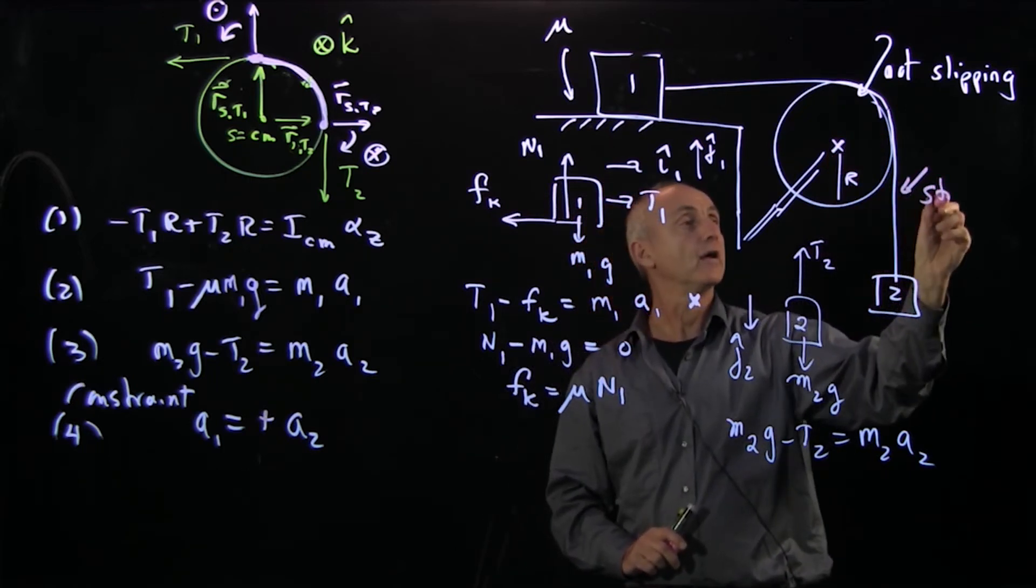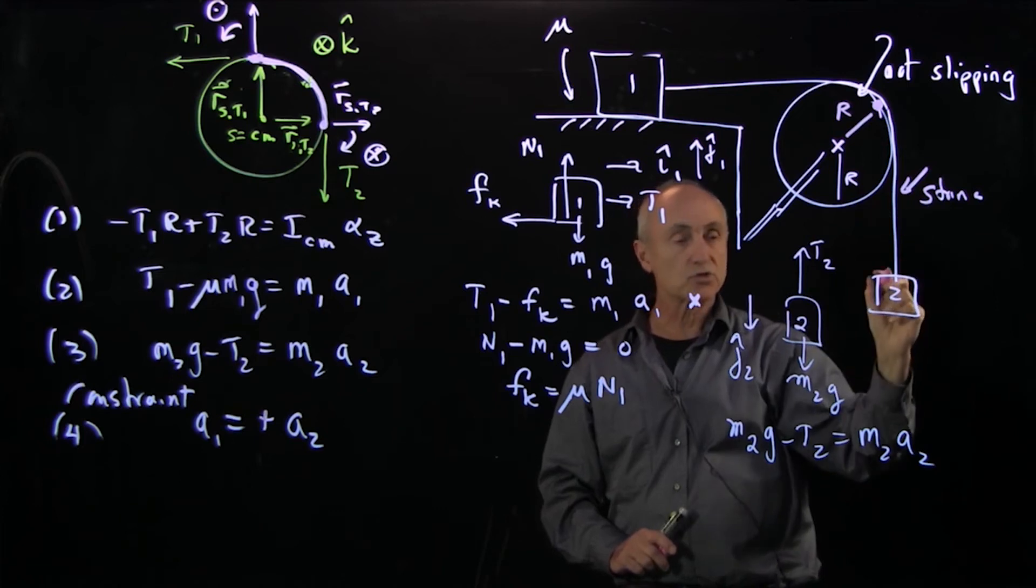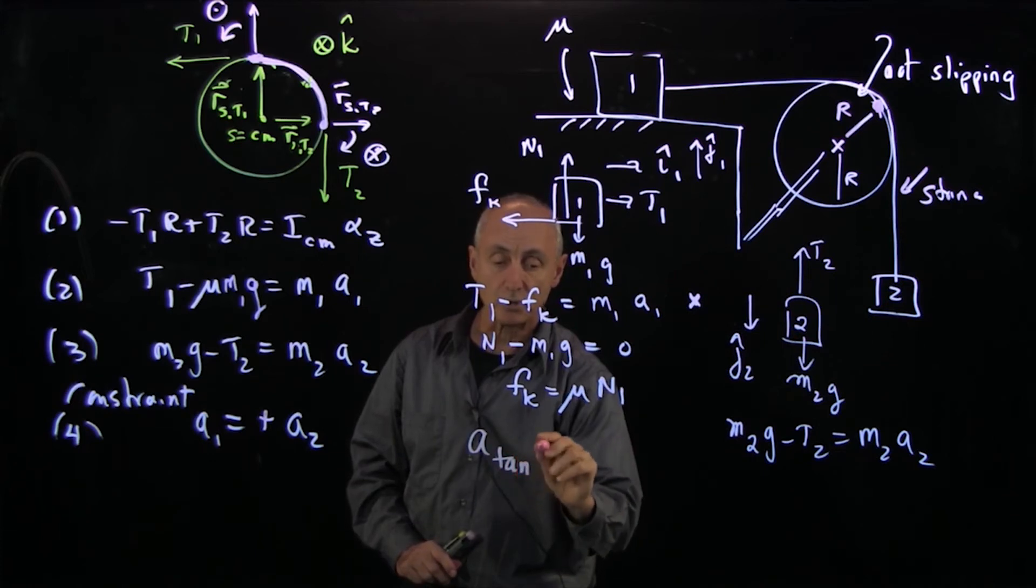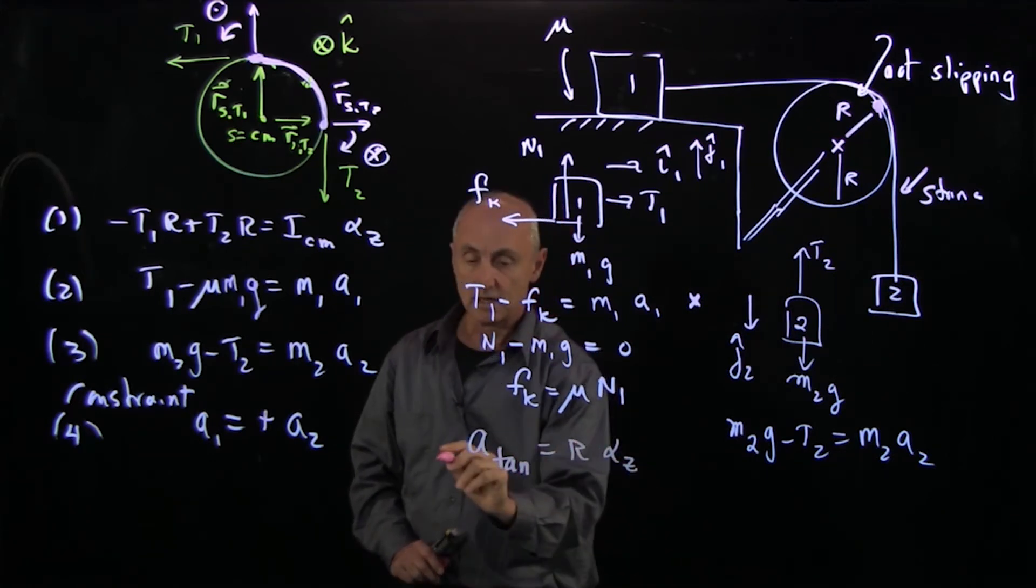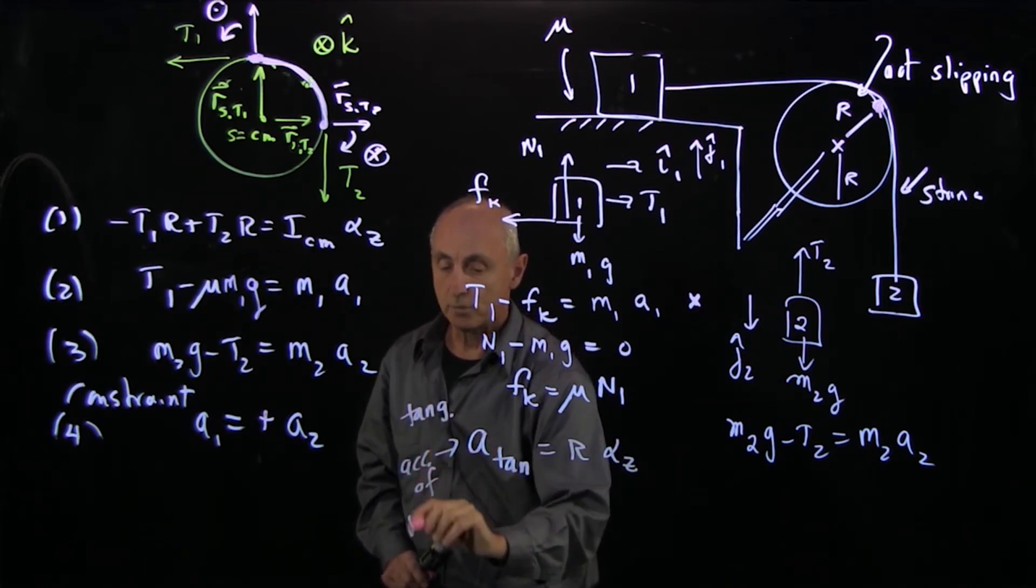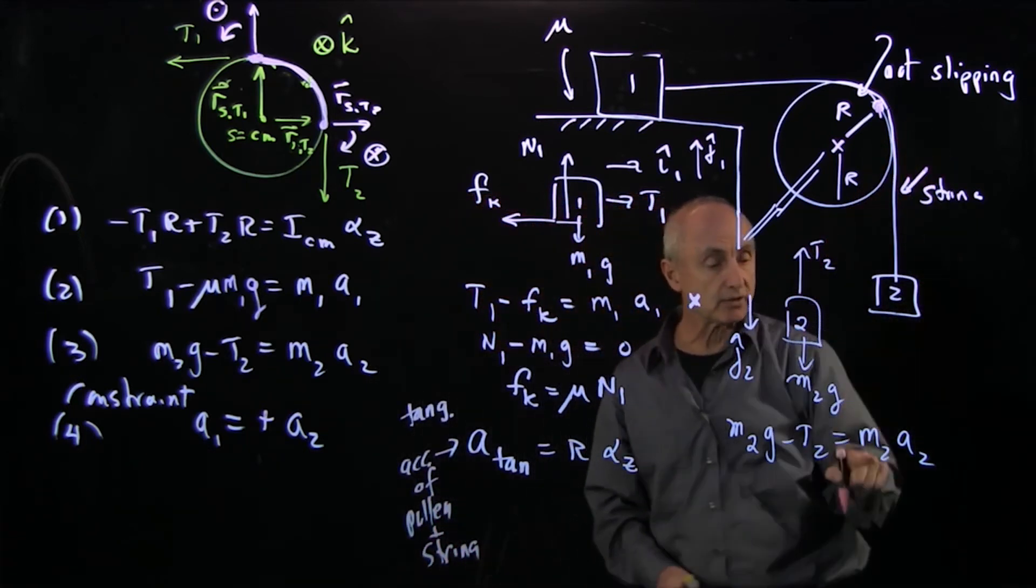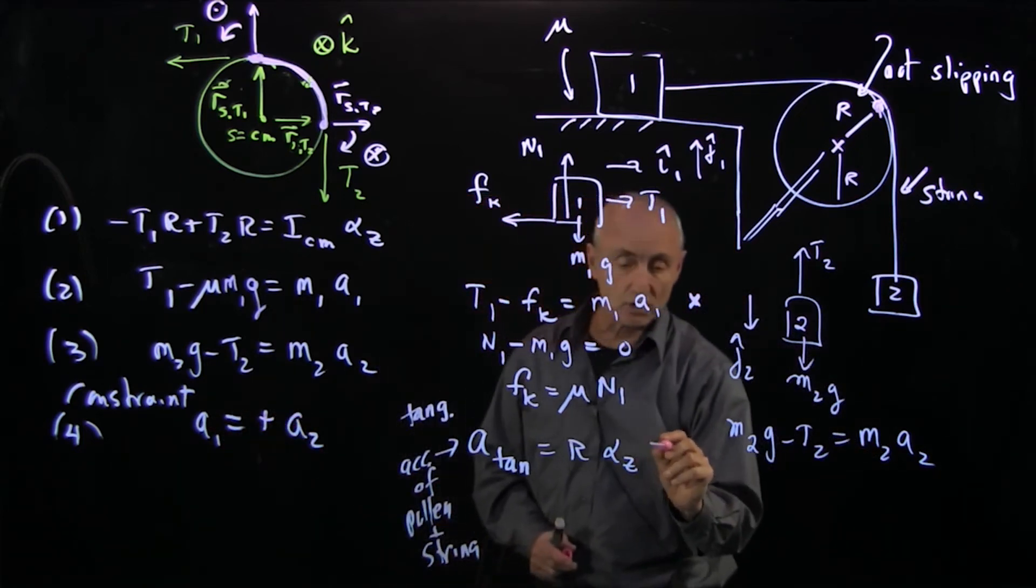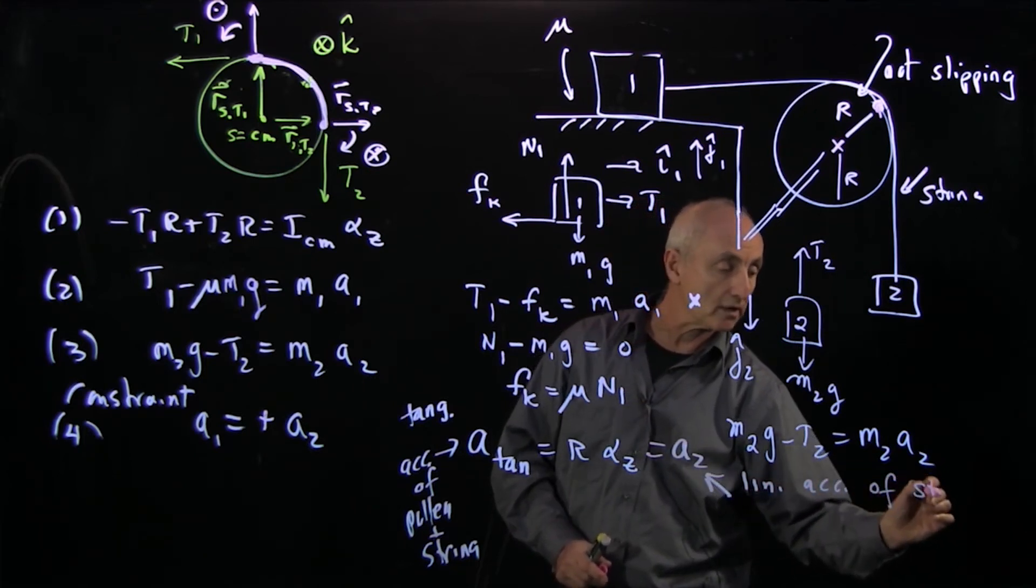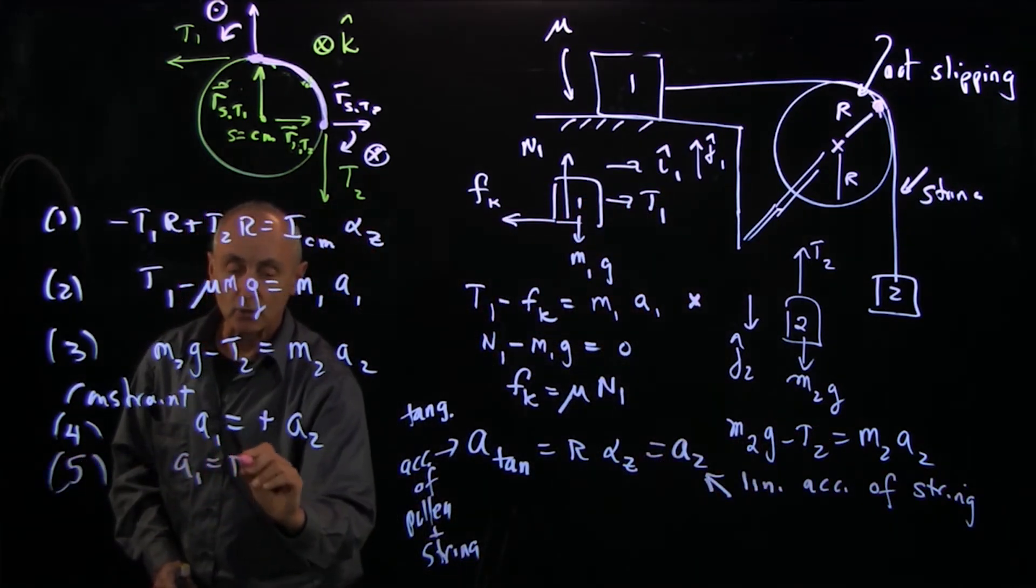Now let's focus on the relationship between the angular acceleration of the pulley and M2. Think about the string. Here we're on a point on the rim. This is a distance r, and the pulley and the string are moving together. So there's a tangential acceleration of the pulley equal to r alpha z. This is the tangential acceleration of pulley and string. But the same string has a linear acceleration, either A1 or A2, so this has to be equal to A2. This is the linear acceleration of the string. And so that's our last constraint, that A1 equals r alpha.